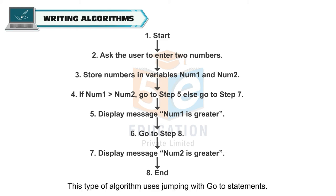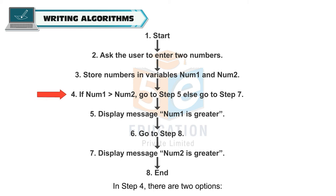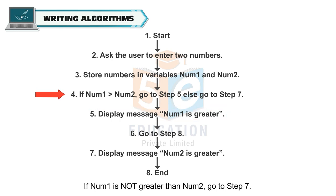This type of algorithm uses jumping with go-to statements. Whenever you encounter a condition, you must think about what the possible answers are — yes or no — and follow each step. In step 4, there are two options: if num1 is greater than num2, go to step 5. If num1 is not greater than num2, go to step 7.